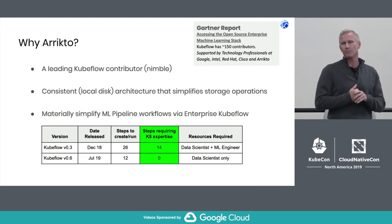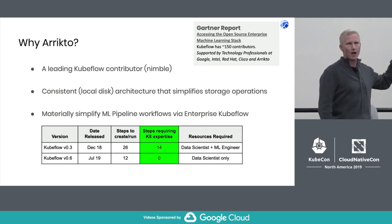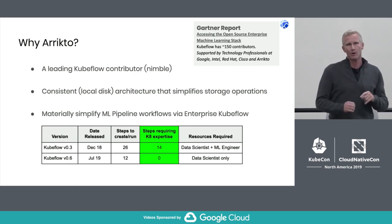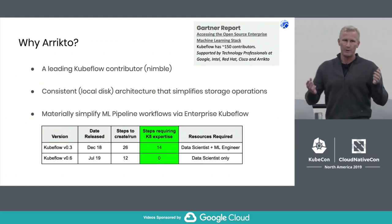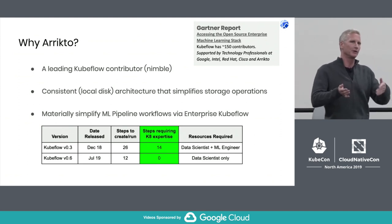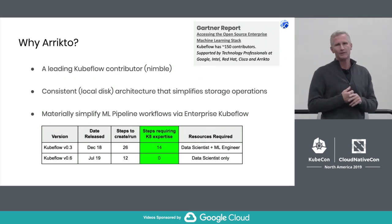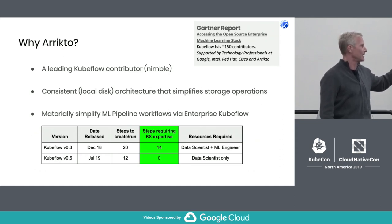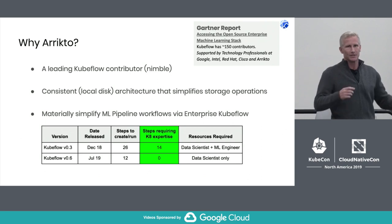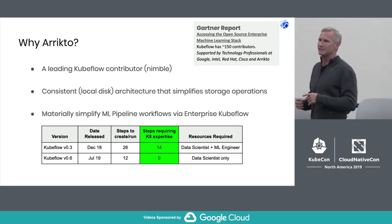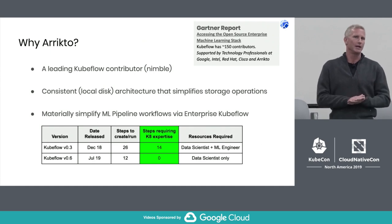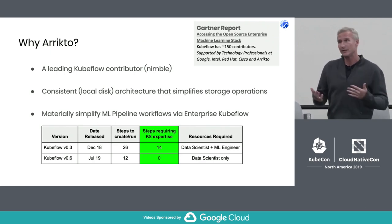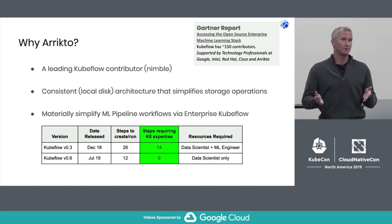To give an example of what we did in six months: the TFX Chicago Taxi Cab example. To run this on-prem about a year ago took 26 steps, and 14 of them required kubectl and YAML files — so a data scientist had to wait for an ML engineer to do some of the work. In less than six months, in Kubeflow 0.6, we cut that down to 12 steps with zero steps requiring any Kubernetes expertise. Basically, a data scientist could do this on their own. We're doing even more as we go towards 1.0.